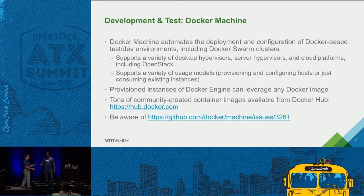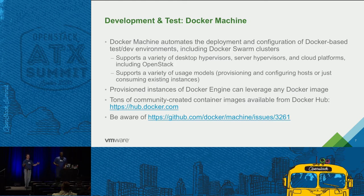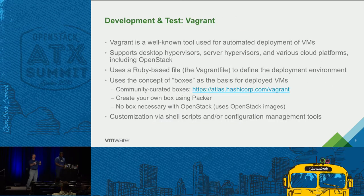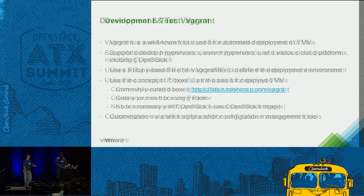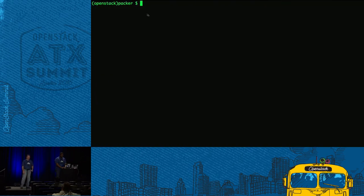We're going to kick off with a live demo — you're going to see Packer and then Vagrant. So in the immortal words of Bill O'Reilly, we're doing it live. For Packer, we have this JSON file that gives us all the instructions of what we want to accomplish. It starts at the top with the provisioners — the provisioner runs after your image is already deployed and does the customization, including deploying Apache and deploying Git.